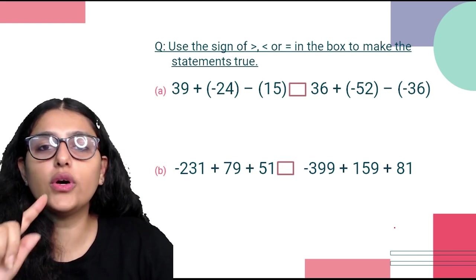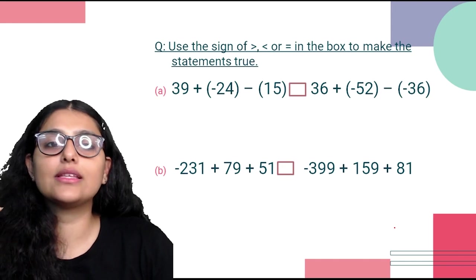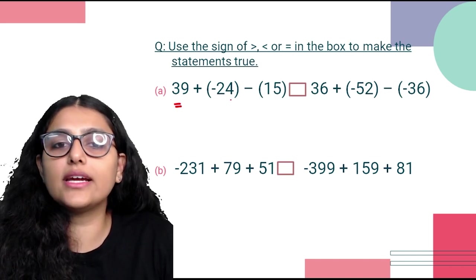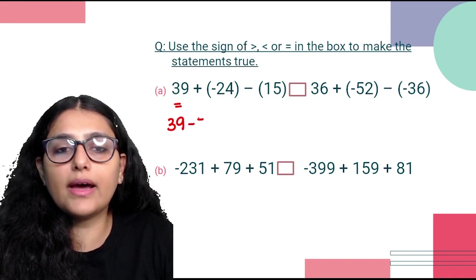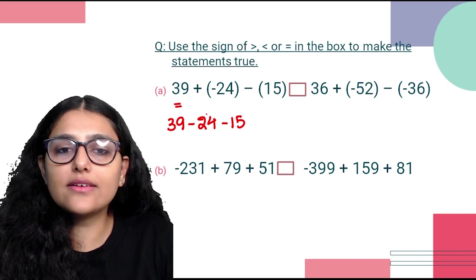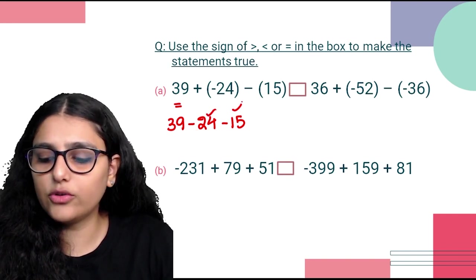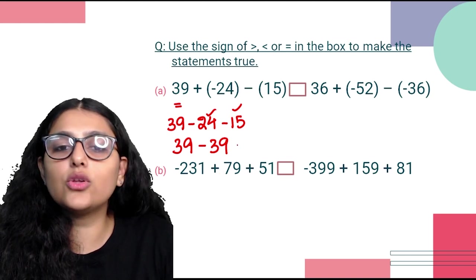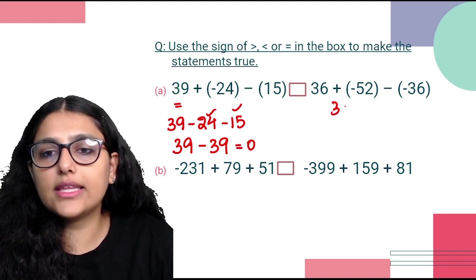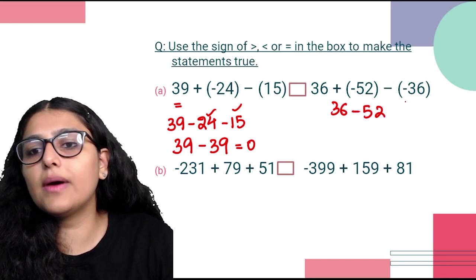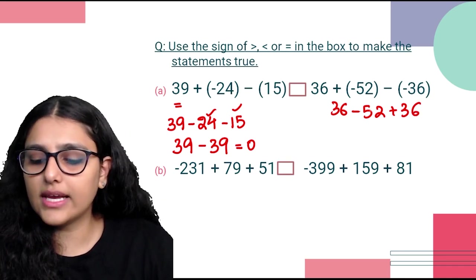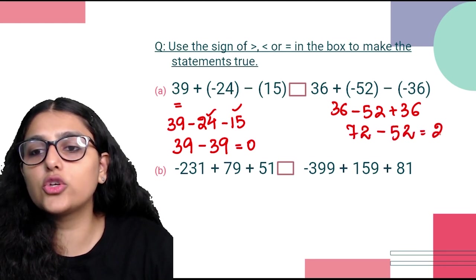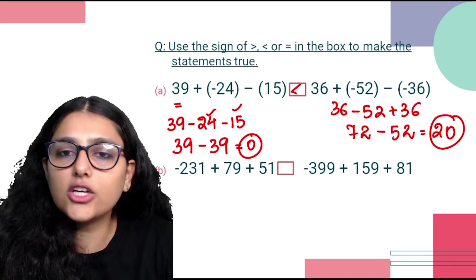Use greater than, less than, or equal to signs to make statements true. First: LHS = 39 + (−24) + (−15) = 39 − 24 − 15; two negatives add → minus 39; 39 − 39 = 0. RHS = 36 + (−52) + (−36); minus minus = plus: 36 − 52 + 36 = 72 − 52 = 20. Since 20 > 0, the sign is greater than on the right side.